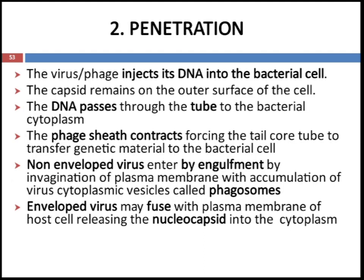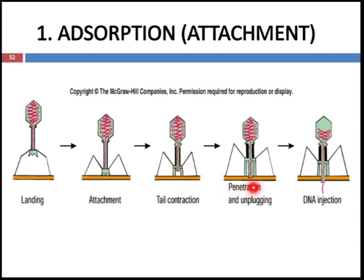The second stage is penetration. In this stage the phage injects its DNA into the bacterial cell. The capsid remains on the outer surface of the cell and the DNA passes through the tube into the bacterial cytoplasm. The phage sheath contracts, forcing the tail core tube to transfer genetic material to the bacterial cell. In non-enveloped viruses, penetration is by engulfment through invagination of the plasma membrane, forming cytoplasmic vesicles known as phagosomes. In enveloped viruses, they fuse with the plasma membrane of the host cell, releasing the nucleocapsid into the cytoplasm.